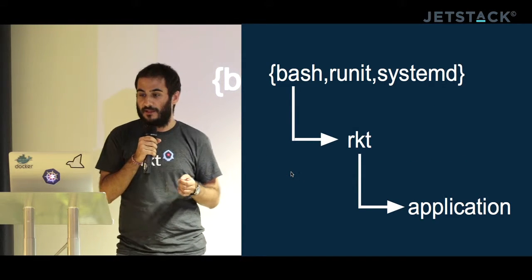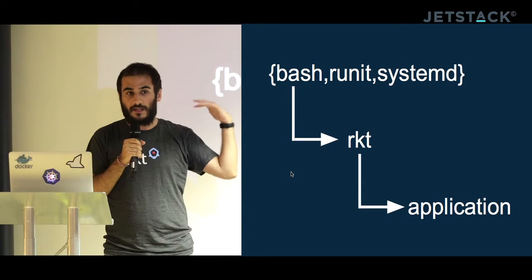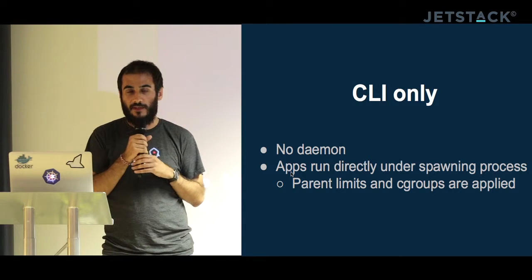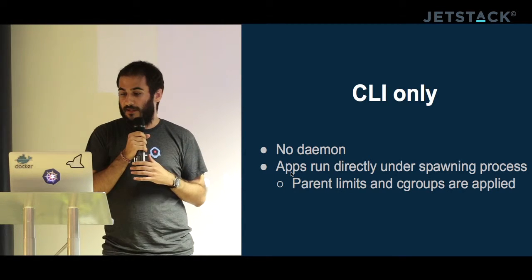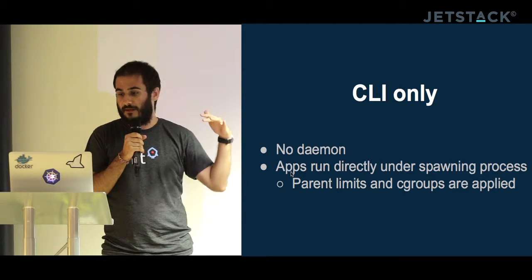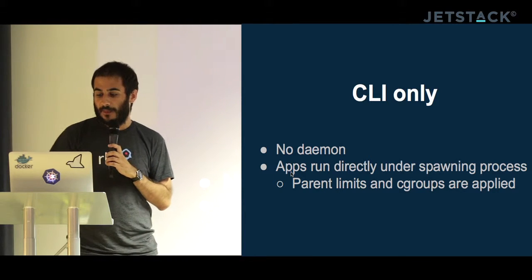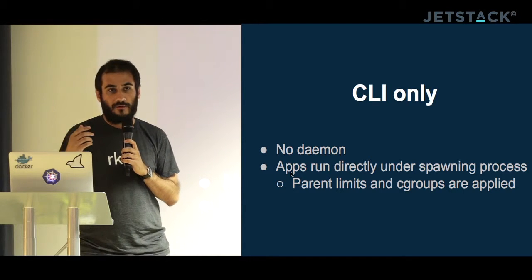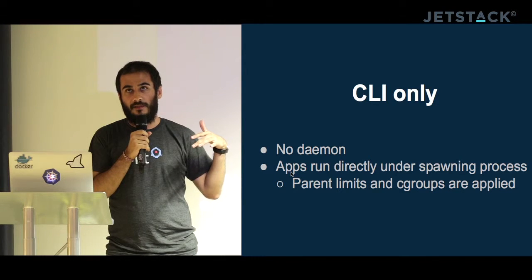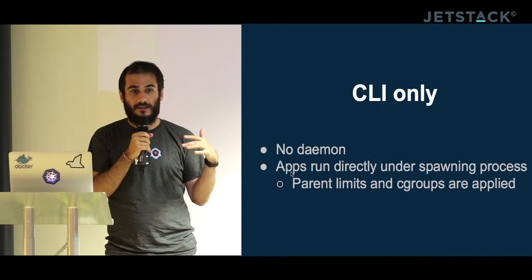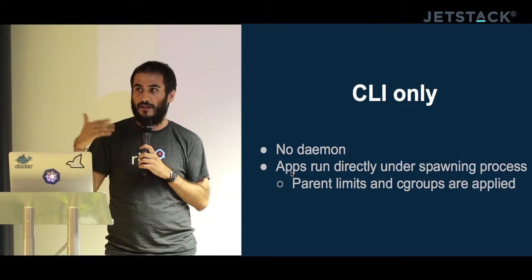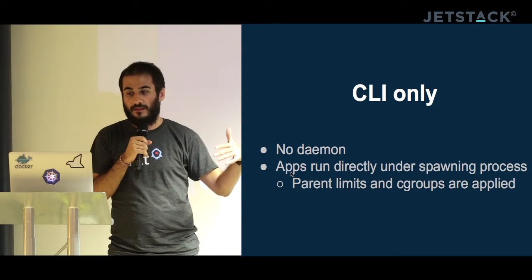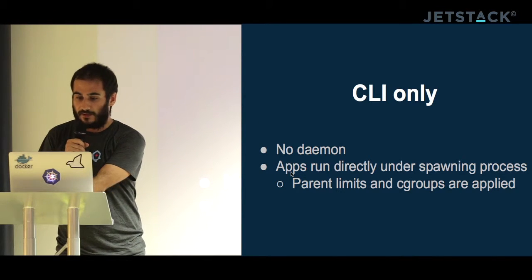Whether it's bash, upstart, or systemd, it doesn't matter — Rocket runs under it, and parent limits are respected. So if you apply a limit to a systemd service file, those limits apply to applications running under it. With Docker, if you apply a limit on the command that runs the Docker image, it doesn't apply to Docker itself — you have to configure the limit on Docker directly. This comes back to not reinventing the wheel.